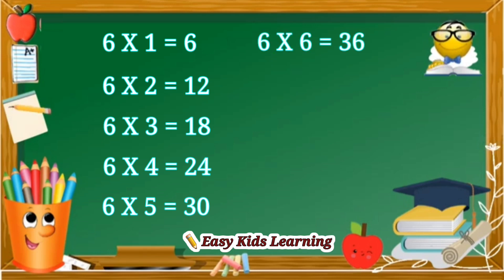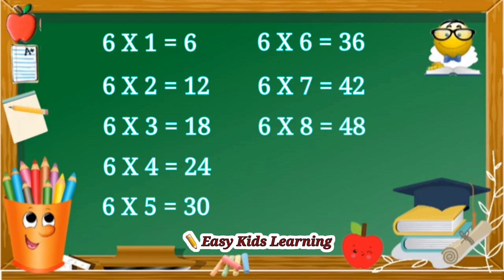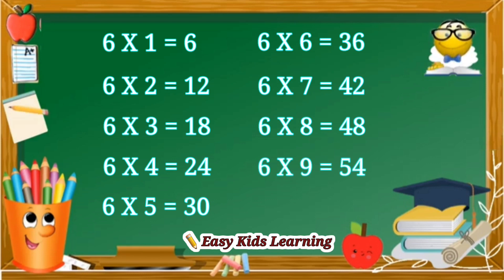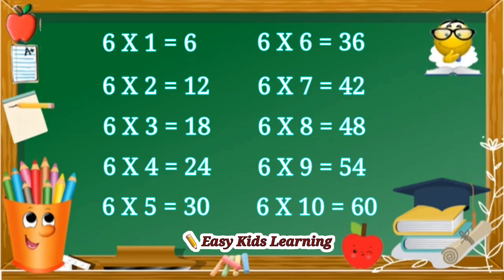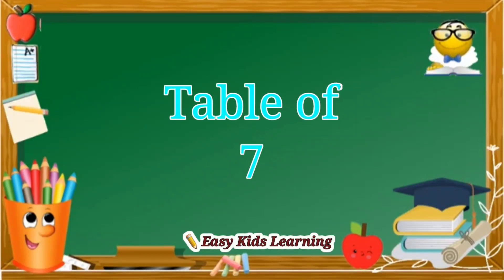6 sixes are 36. 6 sevens are 42. 6 eights are 48. 6 nines are 54. 6 tens are 60.